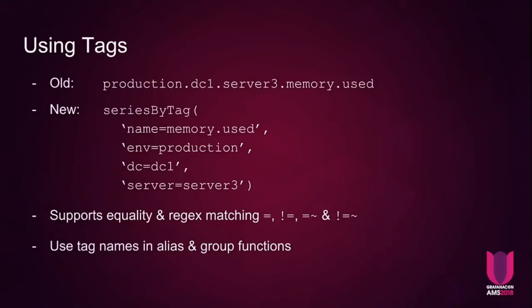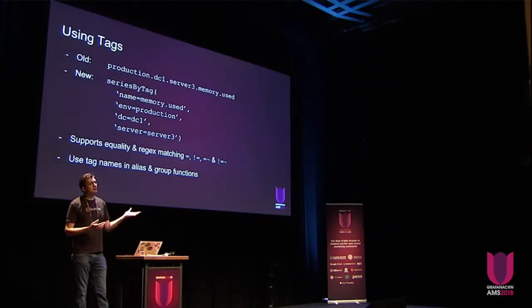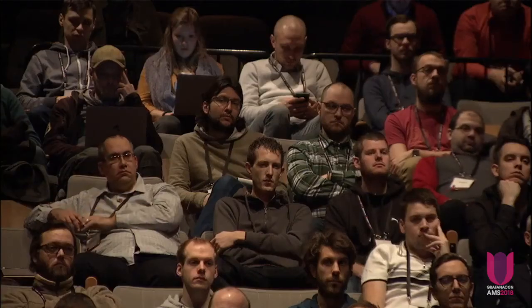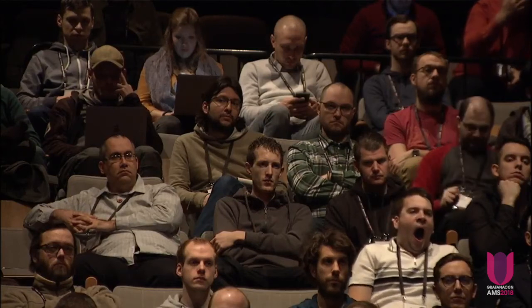We have a seriesByTag function which is the base for everything we do with tags in Graphite. You call seriesByTag and give it the specifiers you want to use. The big difference from Prometheus is that in Graphite the name of the series is just another tag, so you're not obliged to use it — you can locate series by any selection of tags you want. Anywhere that in Graphite 0.9 you would use node numbers, like aliasbynode 1, you can now use the tag name there instead. You can group by tags, alias by tags — use tags anywhere you previously would have had to use nodes — but you can also mix and match.